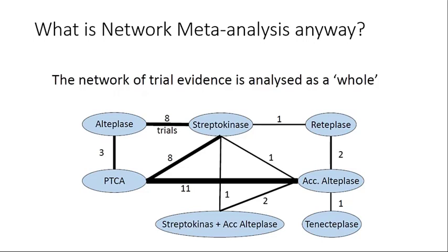For those who don't know what network meta-analysis is — and there are a few of you, but not many — essentially it expands on the idea of a meta-analysis where you're comparing two treatments and establishing if one is more effective than the other. When you get to network meta-analysis, you are thinking about more than two treatments. If you write those treatments in little circles and draw lines between them to indicate where head-to-head trials have been conducted, you start to get networks of trials — that's what the example shown here is. The numbers on each line indicate how many trials there are for each comparison, and it gives you a way of analyzing all that data simultaneously.